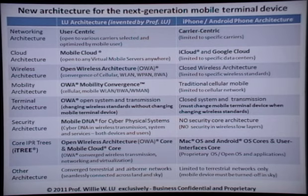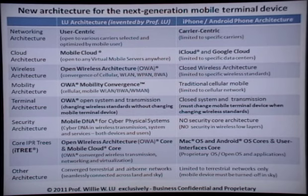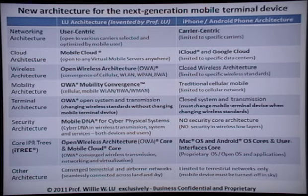The second issue is cloud architecture. The new architecture I call mobile cloud, which is open to any virtual mobile service anywhere. The user can push all his processing from the terminal to the mobile cloud. Mobile cloud is basically a virtual mobile server — you can define any computer with an IP address as the virtual mobile server. Compared to iPhone and Google phone, they are limited to specific data centers, so you have to use the carrier's data centers for the cloud.